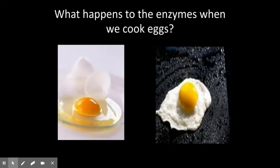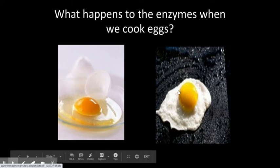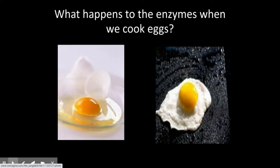This is what happens when you cook eggs. The whites of the eggs are actually where most of your proteins are. When you're frying eggs in a frying pan, you're denaturing the proteins — you're changing the shape of those proteins — and you can never actually make them go back to that shape.